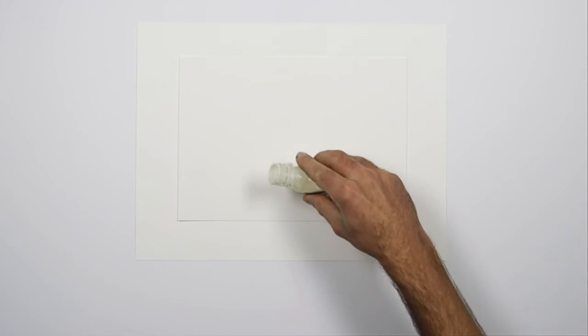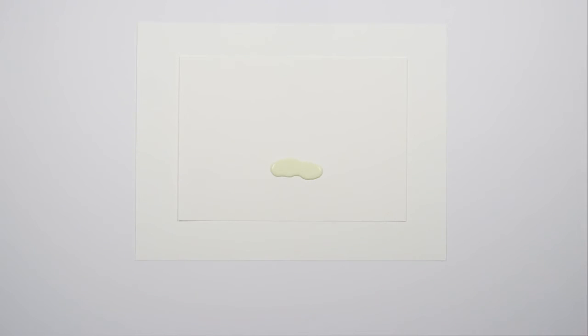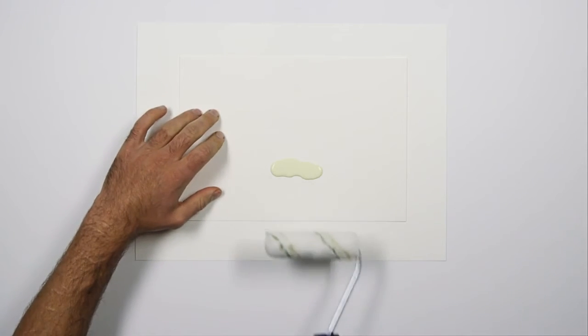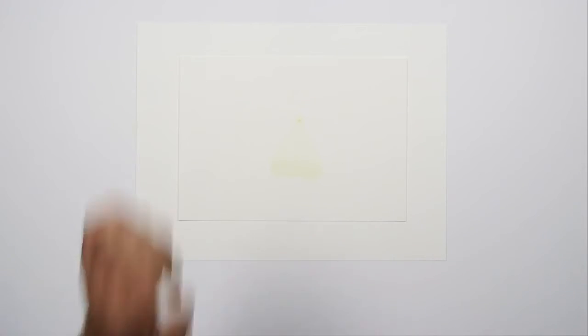You may want a rougher or more textured effect and one way of achieving this is to use a thick pile mini emulsion roller. Pick up some ART masking fluid and roll it onto the watercolor paper.